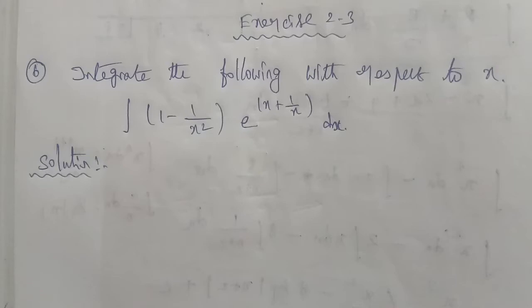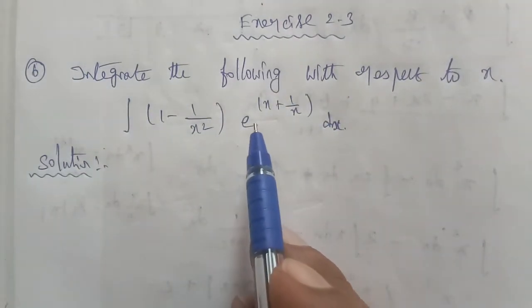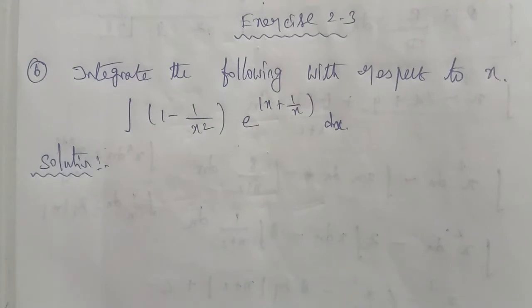Hi students, I am Gopinath. 12th Business Maths XS 2.3, Question number 6. Integrate the following with respect to x: Integral (1 minus 1 by x square) into e power of (x plus 1 by x) dx.